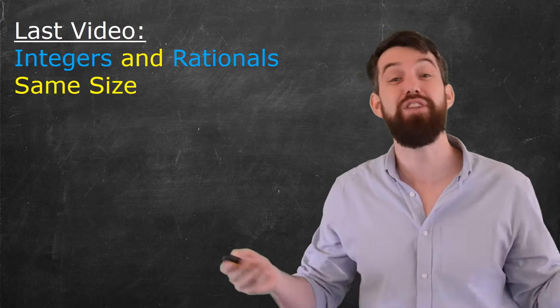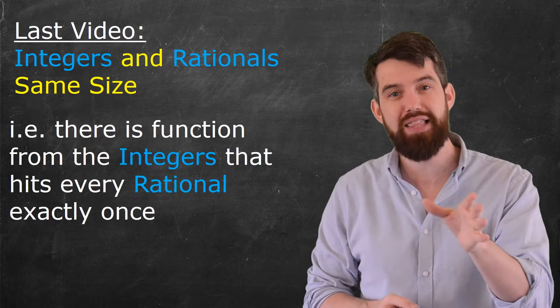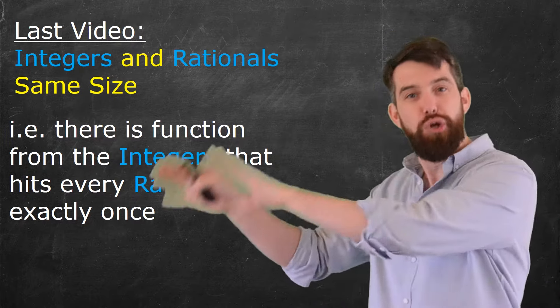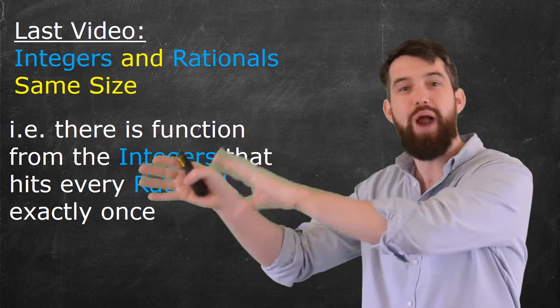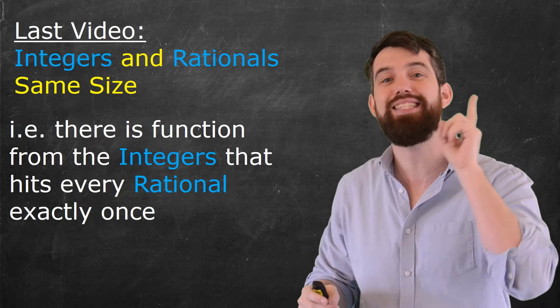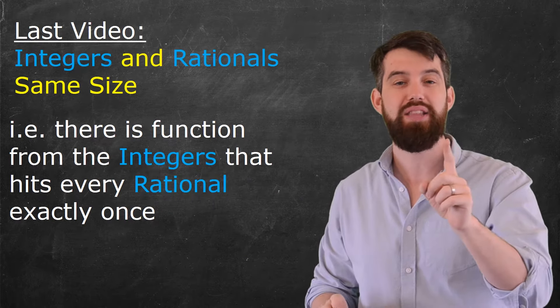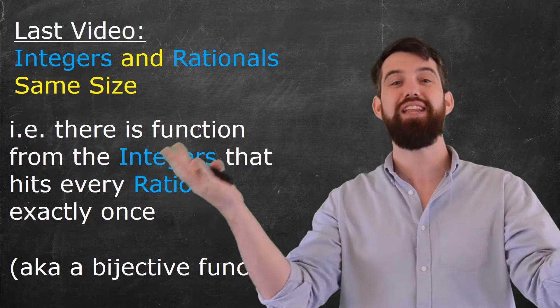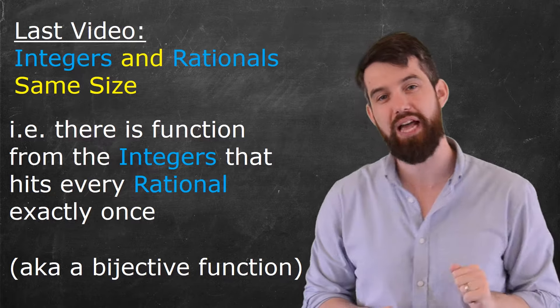And what we meant by that, what we meant by saying that infinite set had the same size is to say that there was some function from the integers to the rational numbers where every rational number got hit exactly once. And that this notion of a bijective function is what we meant by saying that these two different infinite sets have the same size.